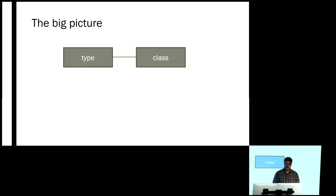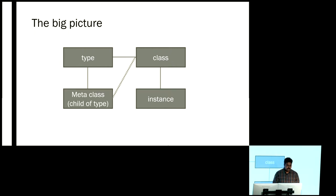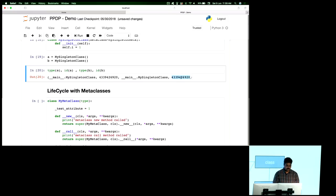Let me also introduce you to the big picture. From a big picture view, we have type. A class is an instance of type — we already established that. Then we can create objects, which are instances of the class. We can also have a metaclass, which is a child of type, and we can use the metaclass to create new classes and change the behavior of both the class and its instances.